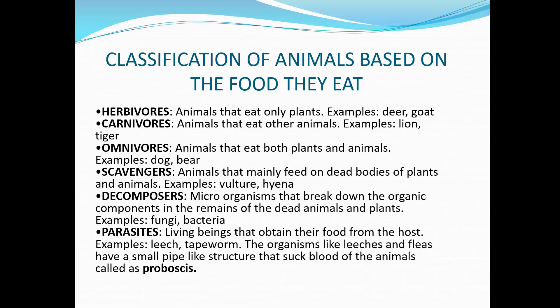Omnivores — 'omni' meaning all — are animals that eat both plants and other animals. Scavengers are a group of animals that feed on dead animals and plants. Dead remains of animals produce foul smell and can spread infection, so scavengers help in cleaning the environment. Scavengers can be carnivores such as hyena, jackal, and vulture, or omnivores like crow. Decomposers are living organisms that feed on dead and decaying plants and animals — examples include fungi and bacteria. Both scavengers and decomposers play a very important role in nature by removing decaying organisms.